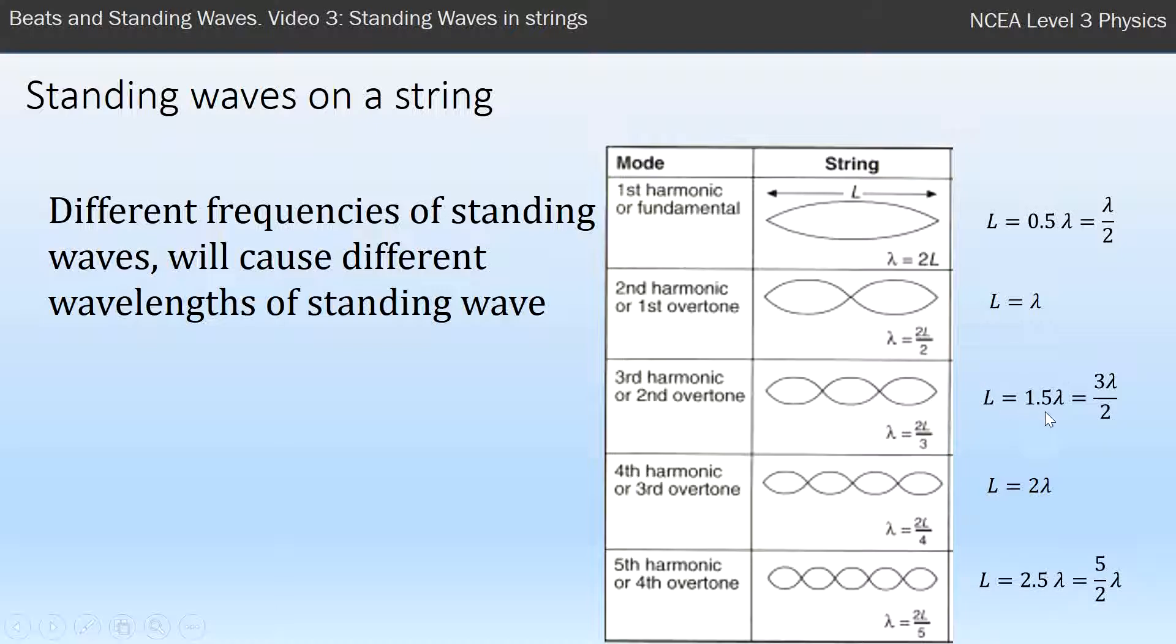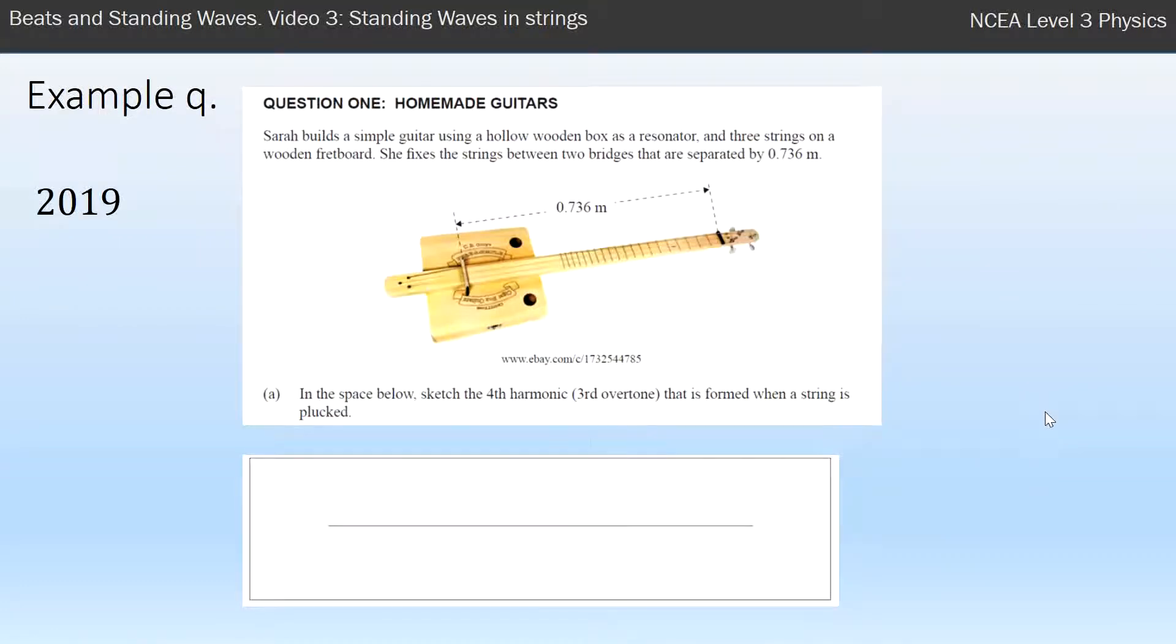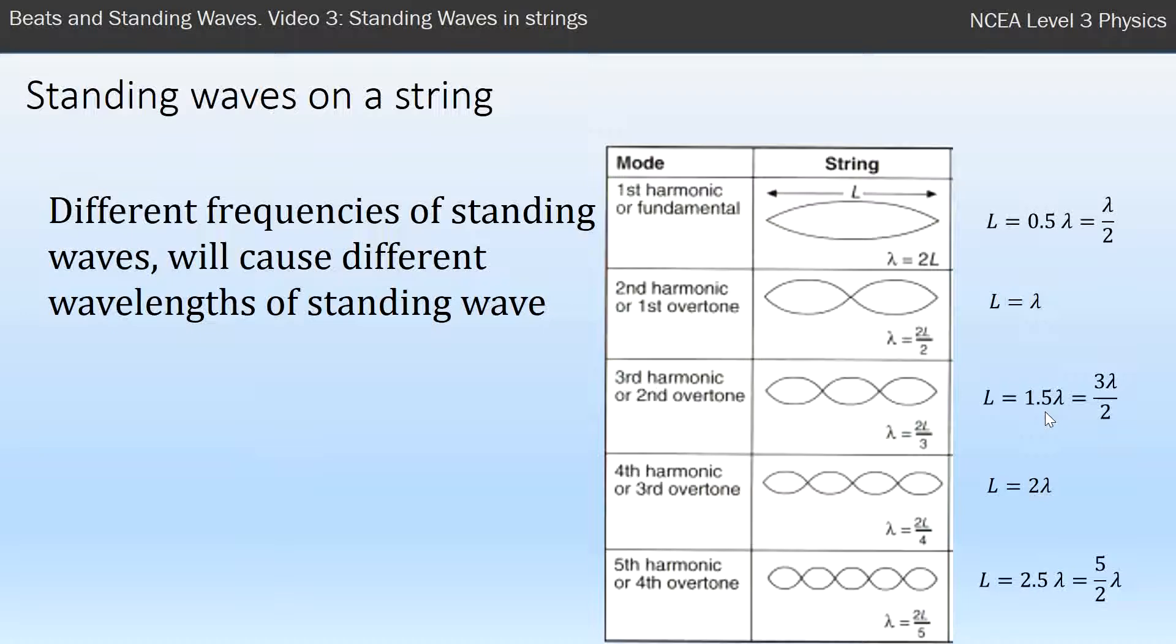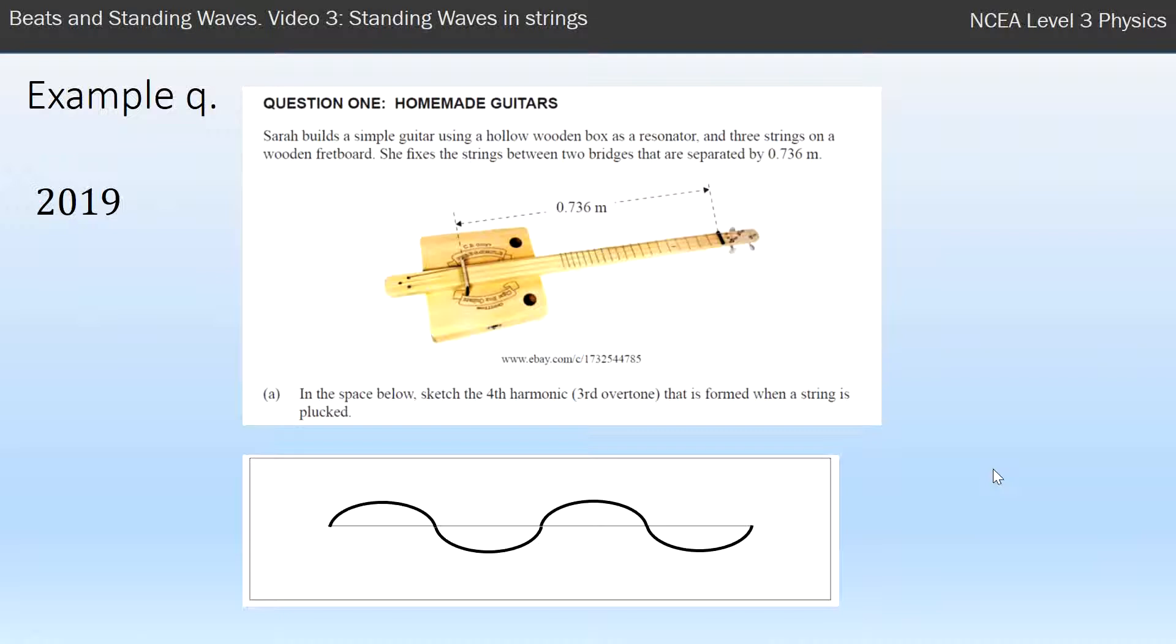So as an example of what you need to do in an exam, it's pretty simple questions. Here's a guitar and they've asked us to draw the fourth harmonic or third overtone. So fourth harmonic is this one down here, and I draw myself one, two, four waves and then draw the opposite sides of them so it shows there's a standing wave. I like to do my opposite sides as a dash, and then regardless of what they've said, I'll always write how many waves there are, so L equals—there's two, four waves there—that's going to help me with my calculation.